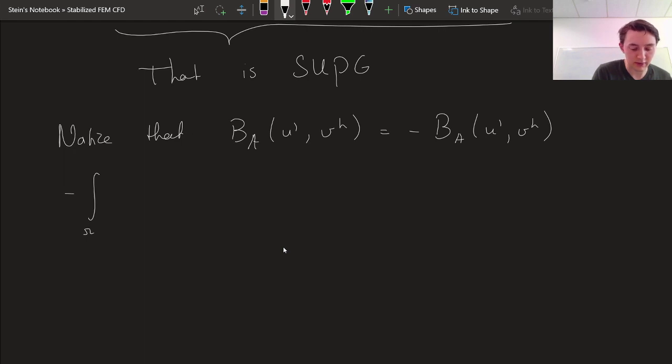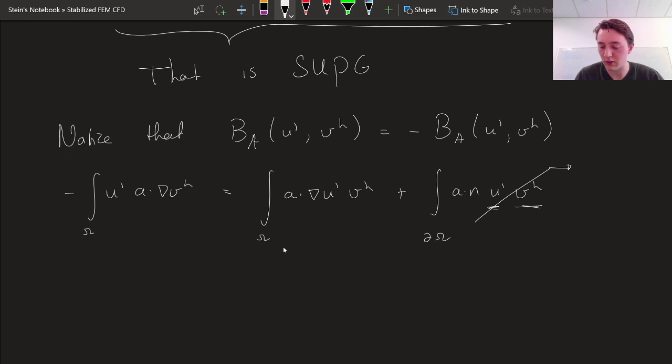Now I can show you that very quickly. The definition of BA was minus U' A dot gradient Vh. Now we can do integration by parts. And then we get the integral over the domain of A dot gradient U' Vh plus some boundary term. But if we use our model of a problem where we have zero boundary conditions, then actually both our Vh and actually also our U' are going to be equal to zero on the domain boundary. And we get that if we swap U' and Vh, this must have been very confusing. Vh U', yeah, so it's equal to its own adjoint. Or it's equal and opposite to its own adjoint. Yeah, so we get introduced now a minus if we flip U' and Vh.